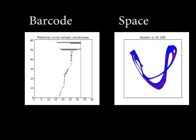For example, components and potentially useful circle-valued functions. This is shown as a barcode where long bars correspond to persistent features. We can turn these features into coordinate functions.